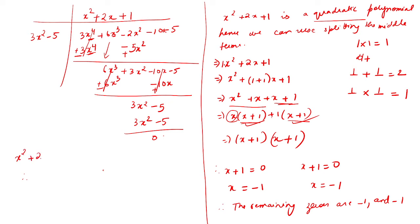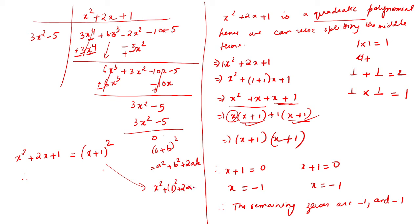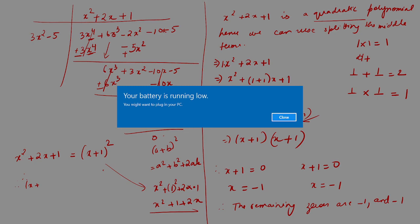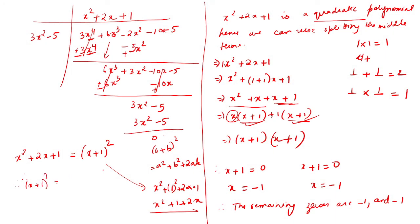You don't necessarily have to use splitting the middle terms for this problem. Since x squared plus 2x plus 1 is the same as x plus 1 whole squared — using the formula a plus b whole squared equals a squared plus 2ab plus b squared — you can directly write x plus 1 whole squared equals 0, giving x plus 1 times x plus 1 as the factors.